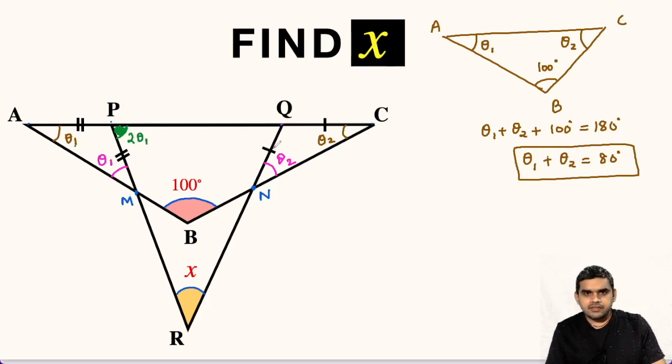Likewise, if we focus on this triangle QCN, once again this angle will be exterior angle. So the value of this angle will be sum of theta 2 plus theta 2, that is 2 times theta 2.